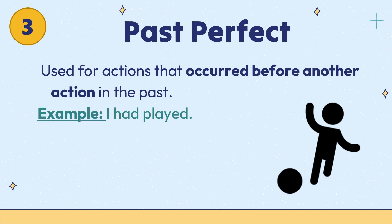Third is past perfect. It is used for actions that occurred before another action in the past. For example: I had played.